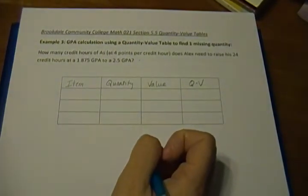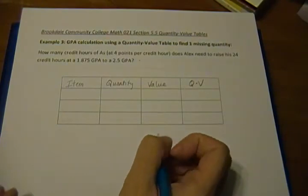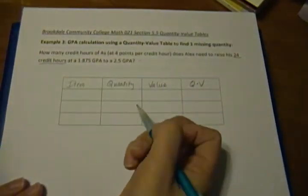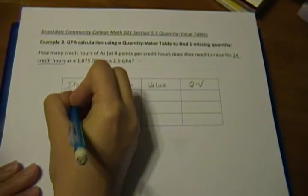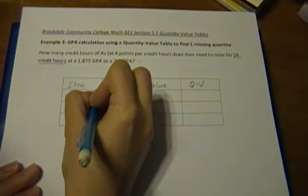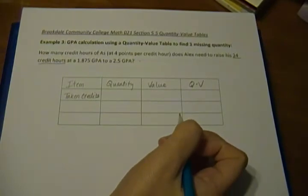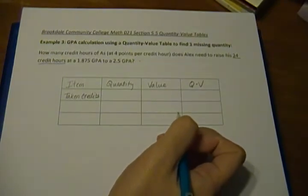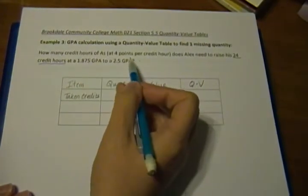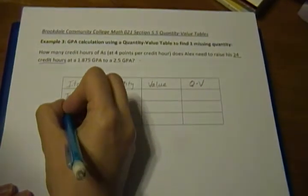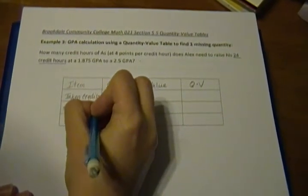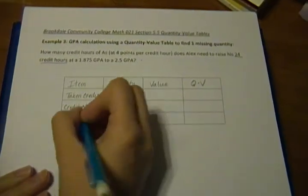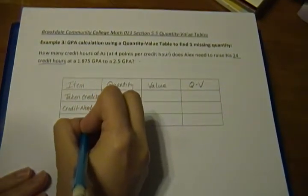Let's look at the information that we have. So far, Alex has taken 24 credit hours. So what we can do is we can say he has taken credits, because he's already completed those courses. And then we're looking at how much he needs, so we're going to look at his credit needed. Those are the two items that we're looking at. And of course, the last box here is our total.